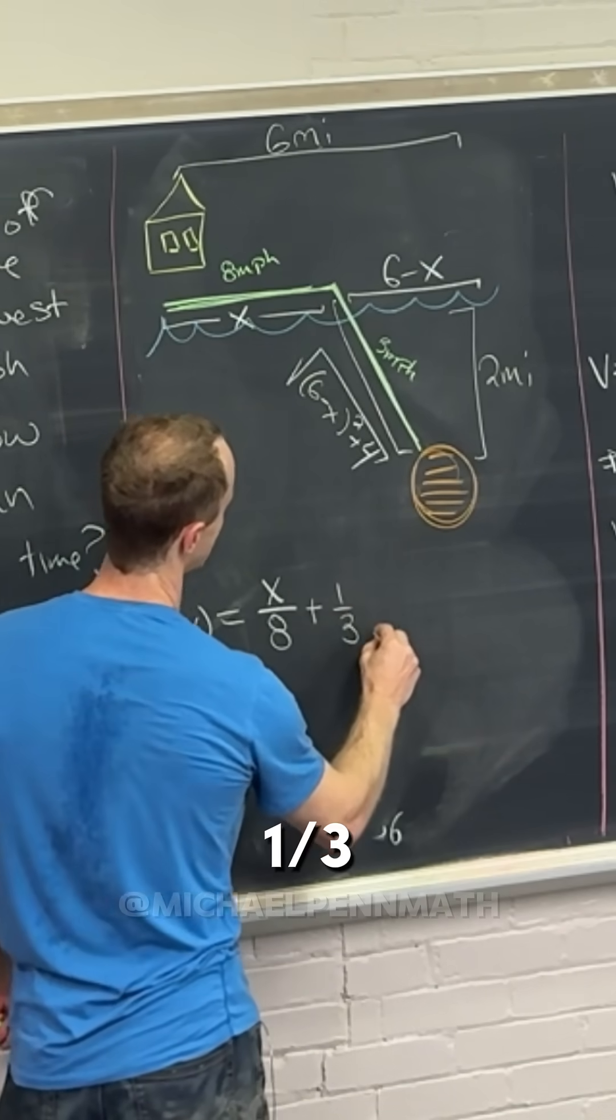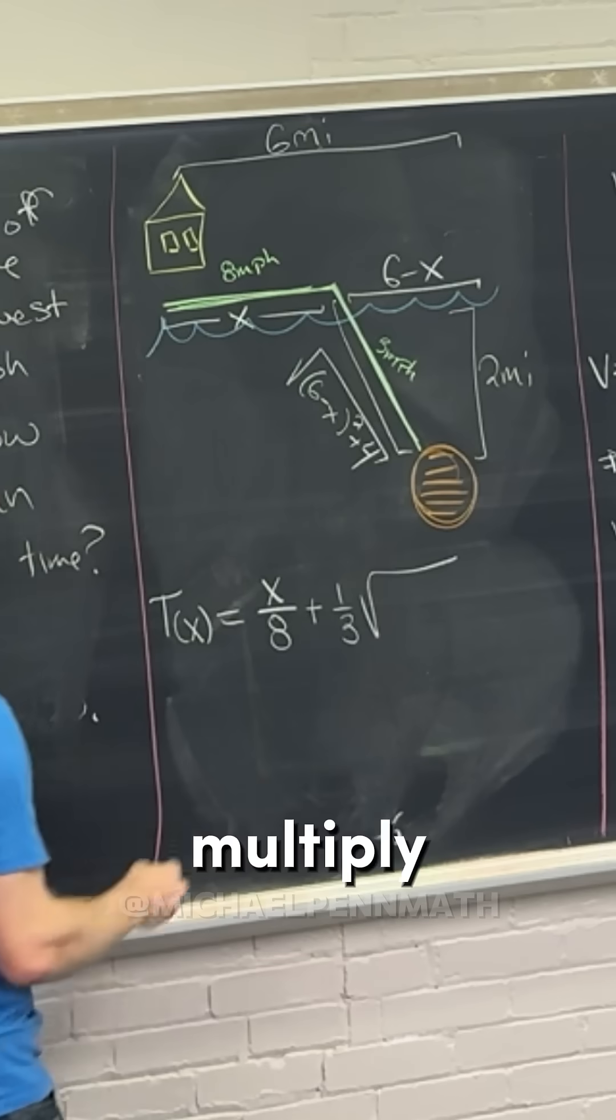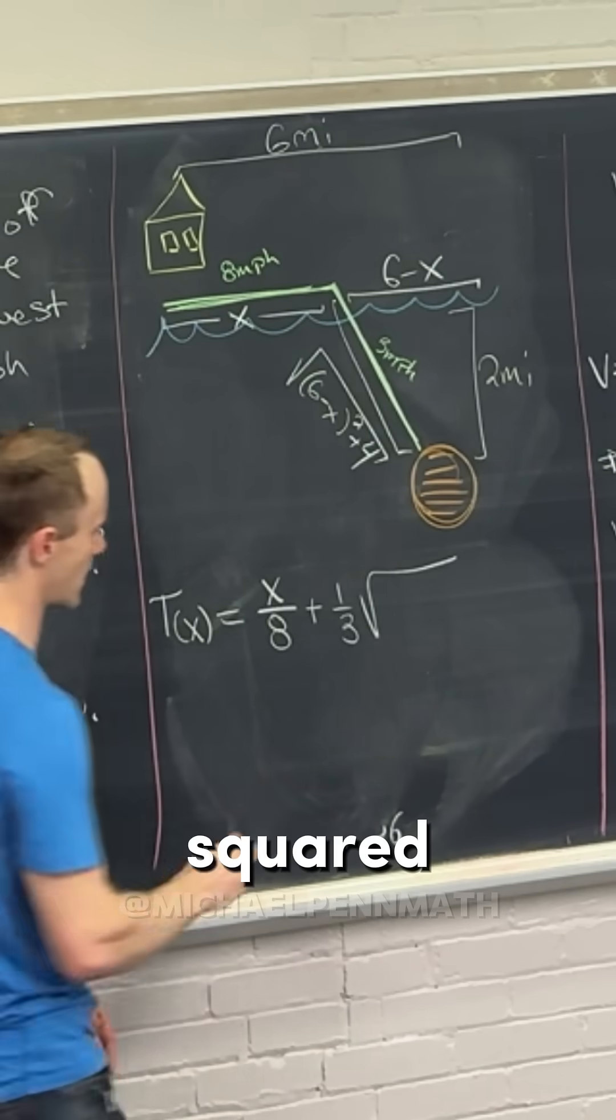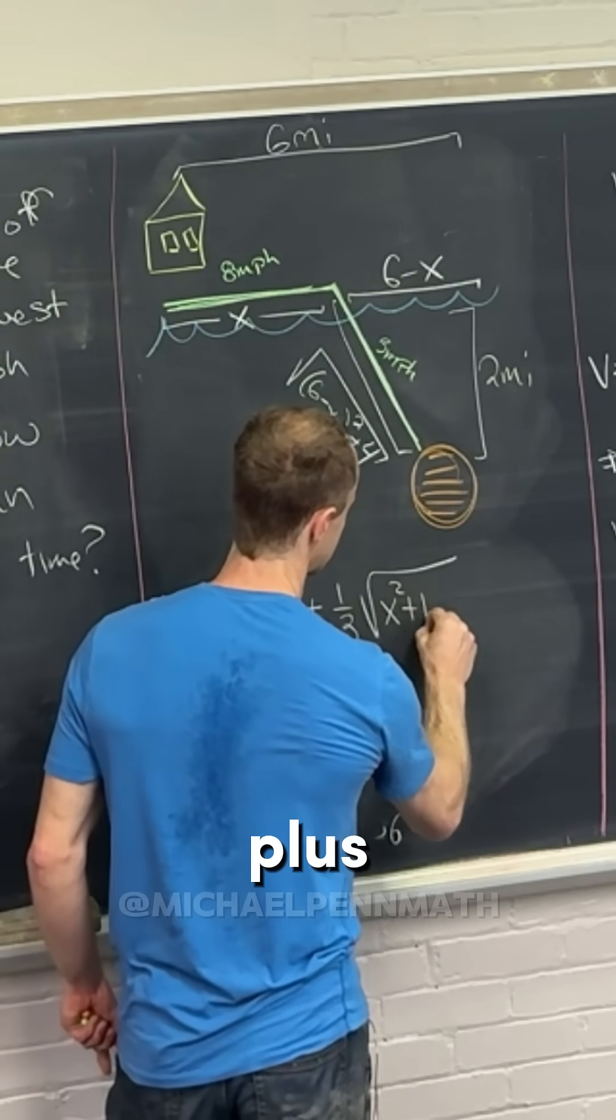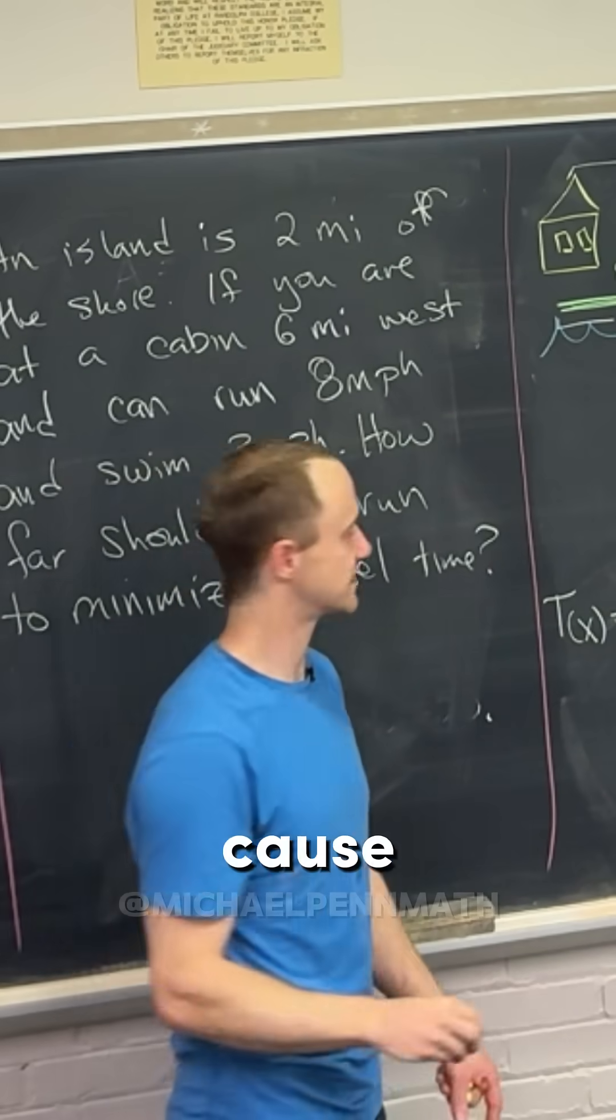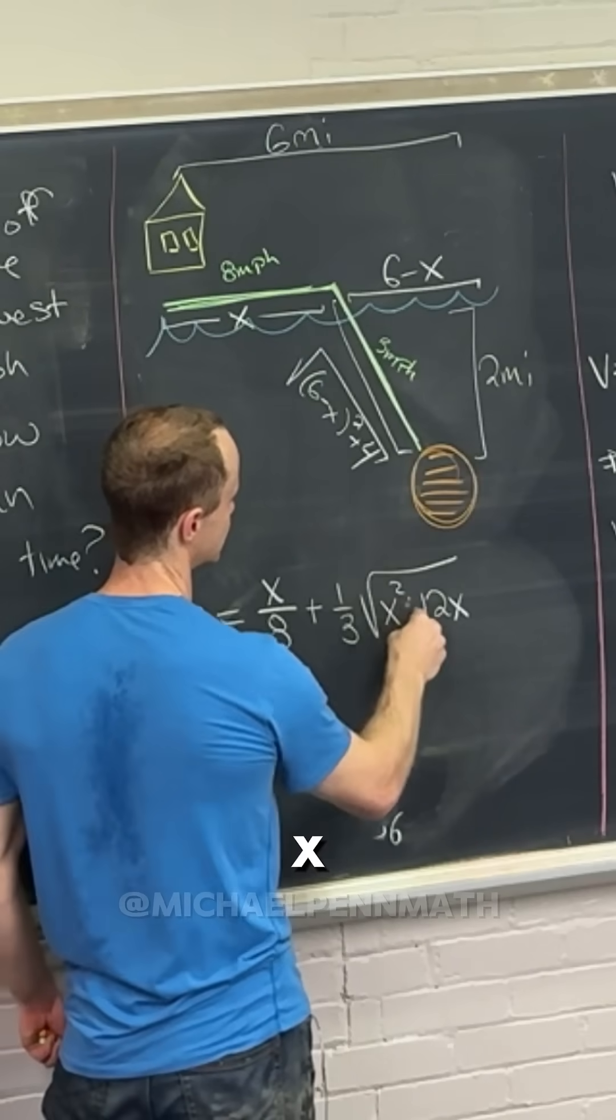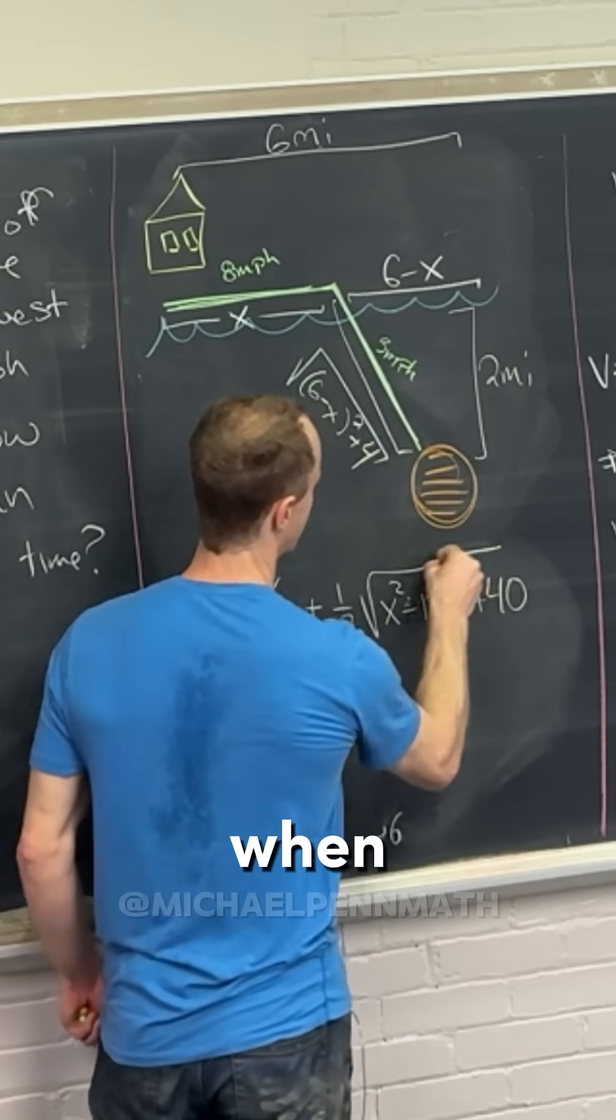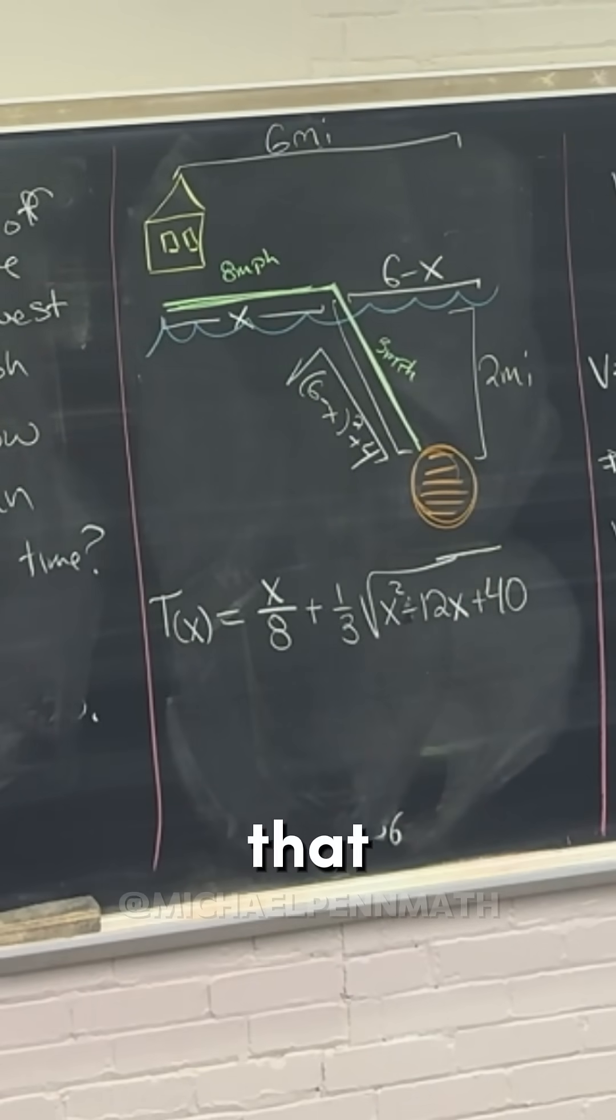Then the square root of, well we can multiply this out so that's going to be x squared plus 12x, and then plus what, 40? Yeah, because it's 36 and that should be minus 12x. x squared minus 12x plus 40 when all is said and done. We've got something like that.